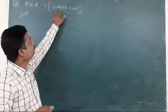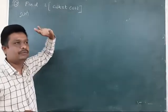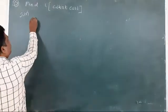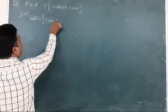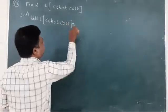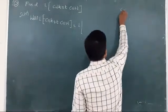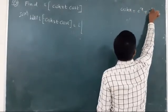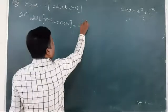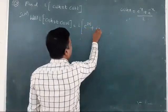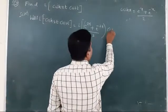We will take one more example: find the Laplace transform of cosh 2t times cos 2t. Here we have the product of a hyperbolic function and a trigonometric function. First I will simplify using the definition of the hyperbolic function: cosh x equals (e to the power of x plus e to the power of minus x) divided by 2. So cosh 2t equals (e to the power of 2t plus e to the power of minus 2t) divided by 2, and I write cos 2t as it is.